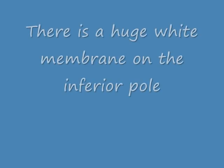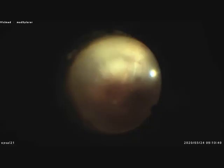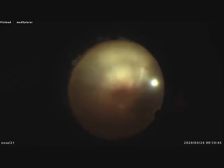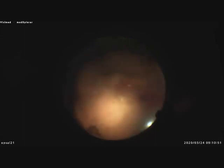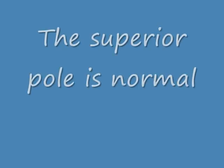Now comes the interesting finding on this video. Please observe the white retina at the inferior pole — the complete inferior pole is covered by white tissue. The superior pole is normal, and there are some hemorrhages at the central pole.